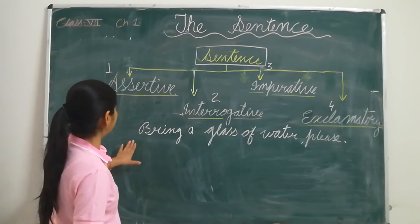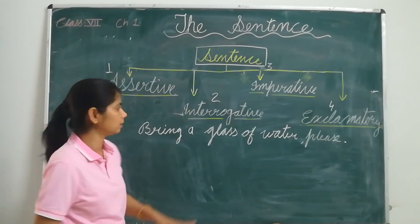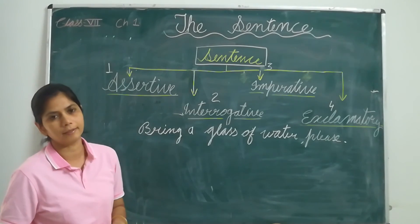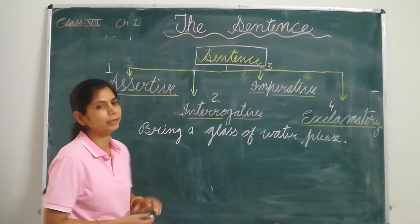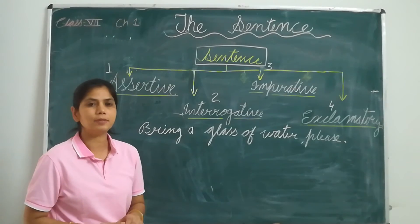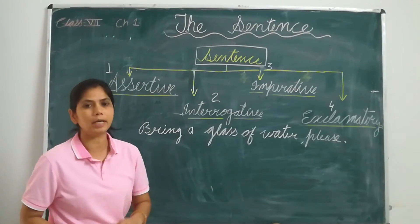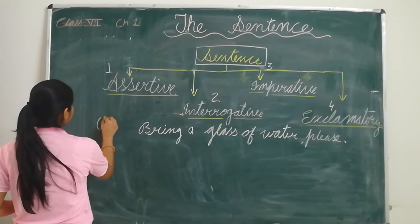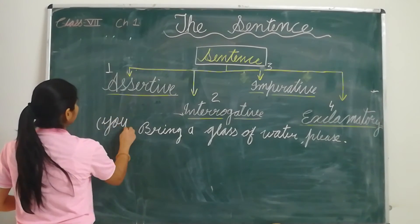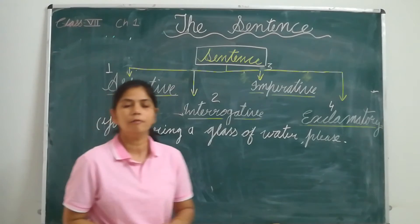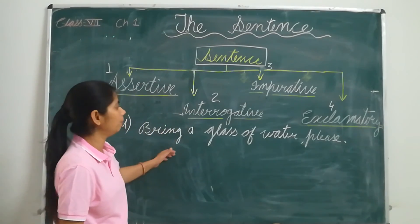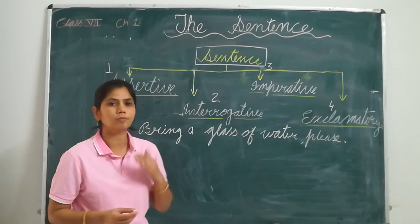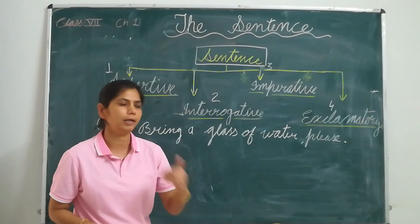We ask someone to do something — in the form of a command, a request, or an order. These types of sentences are imperative sentences. In imperative sentences, we do not write the subject, but it is implied. The subject of imperative sentences is always 'you.' We use these types of sentences for command, request, and order.